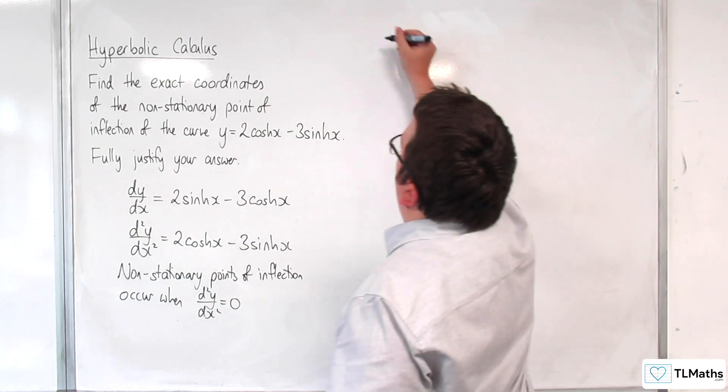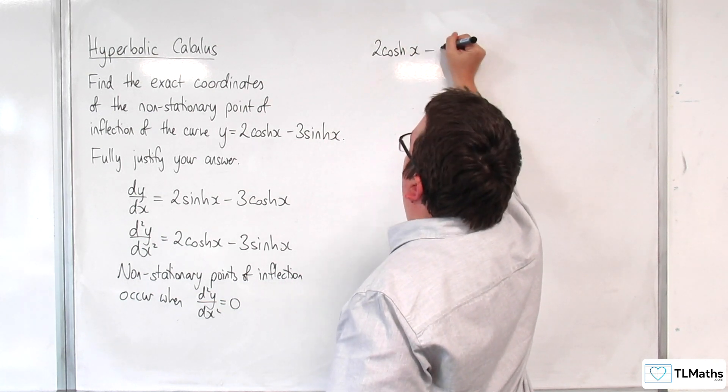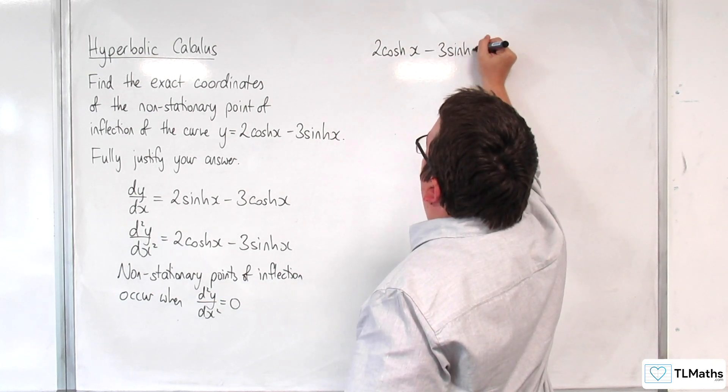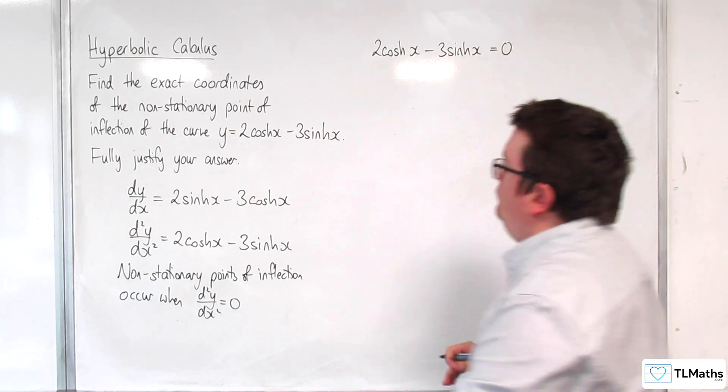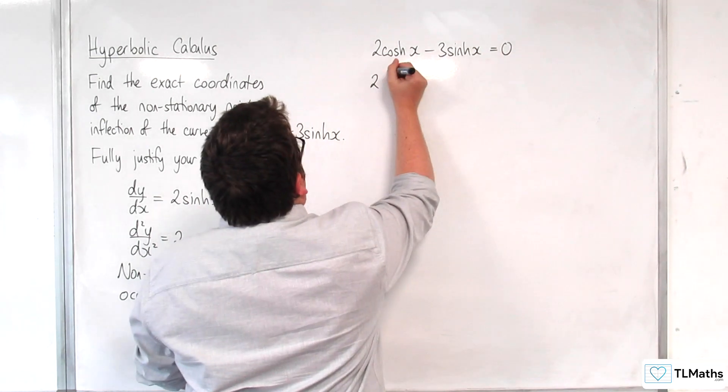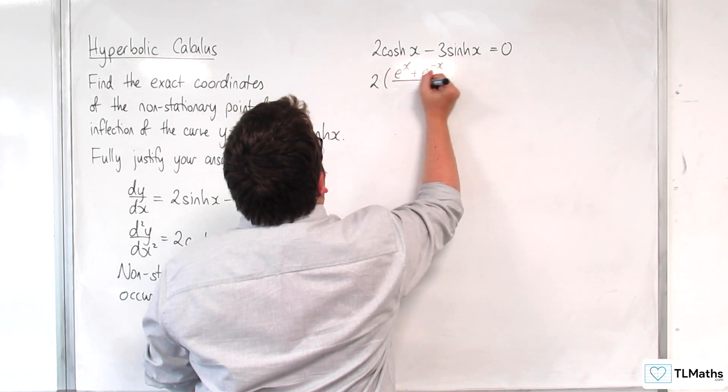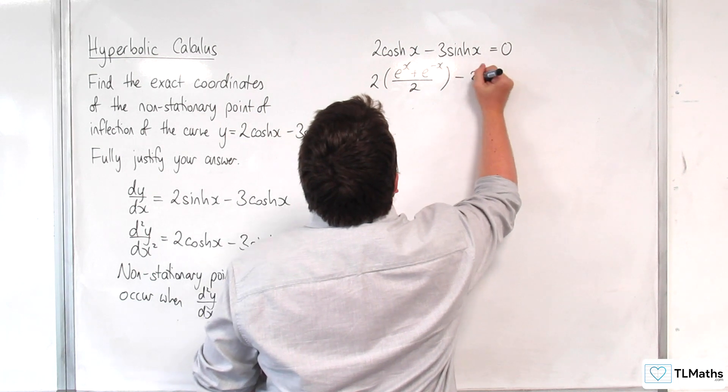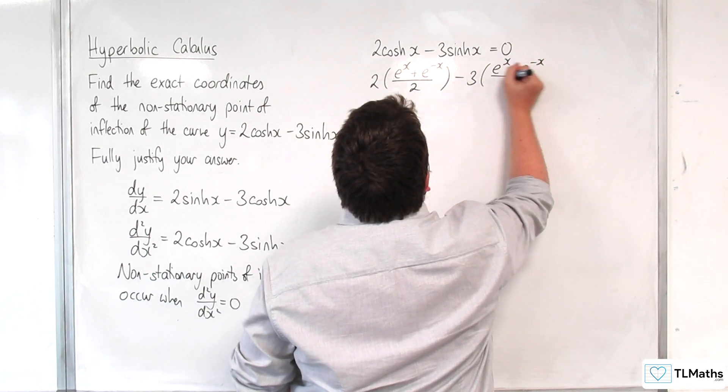So what we're going to do is we are going to put our second derivative equal to 0 and solve this equation. So cosh(x) is e^x plus e^(-x) over 2, and sinh(x) is e^x take away e^(-x) over 2.